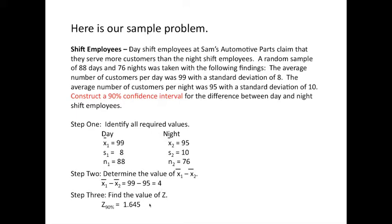So, we need to find our z-score value. We're looking at a 90% confidence interval. So, our z value is 1.645.